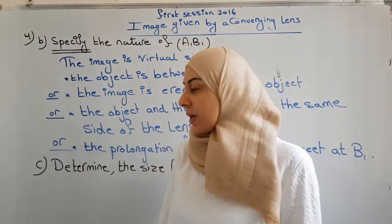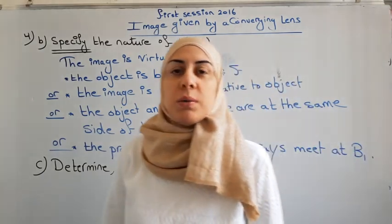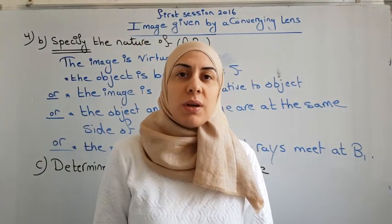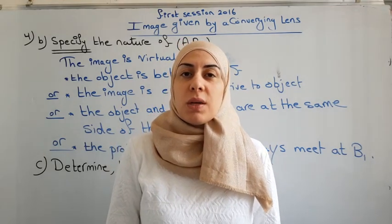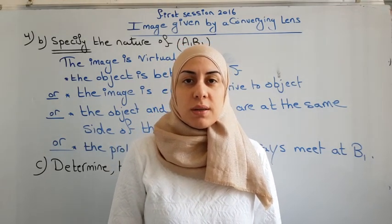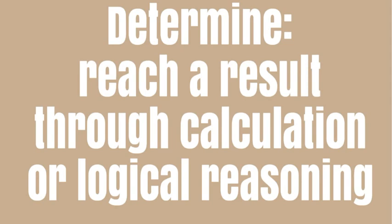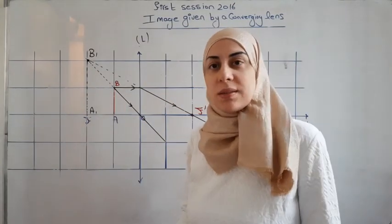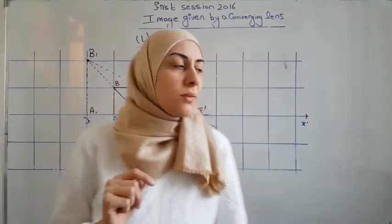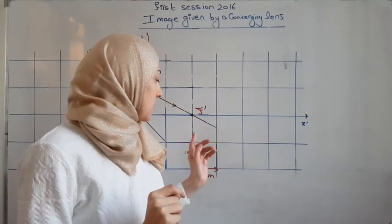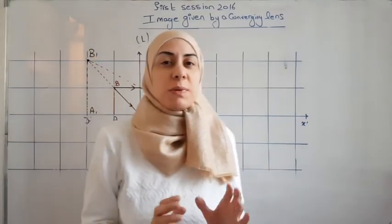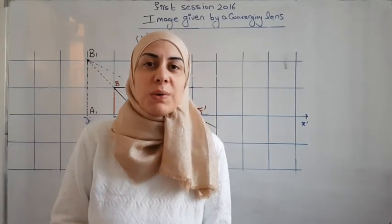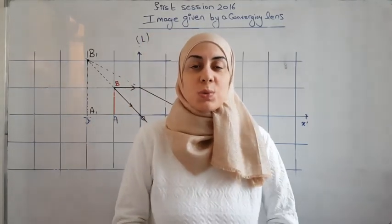We have to determine the size A1B1 of image AB. Determine means we rate our answer by calculation or logical reasoning. The size of A1B1 is two centimeters graphically, and on the y-axis we have a real scale, meaning each one centimeter is drawn as one centimeter. Therefore A1B1 equals two centimeters.